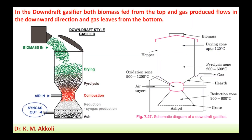Now we will take the downdraft gasifier. In the downdraft gasifier, both the biomass fed from the top and the producer gas flow in the downward direction — that's why it is called a downdraft gasifier — and gas leaves from the bottom. In this commonly used sketch, biomass is fed from the top and passes through the different zones.